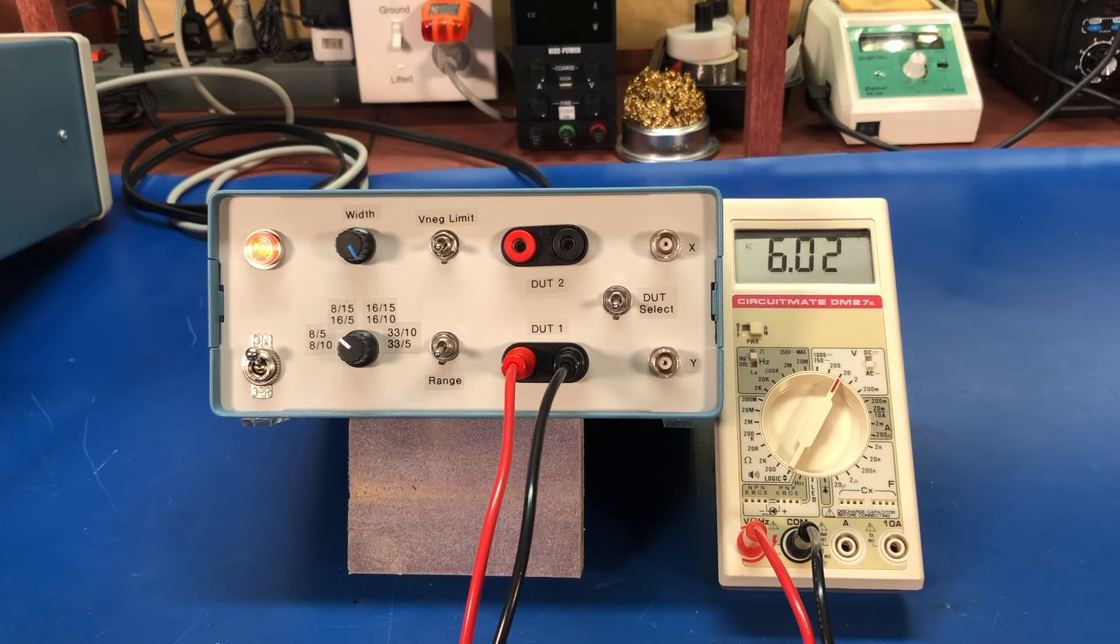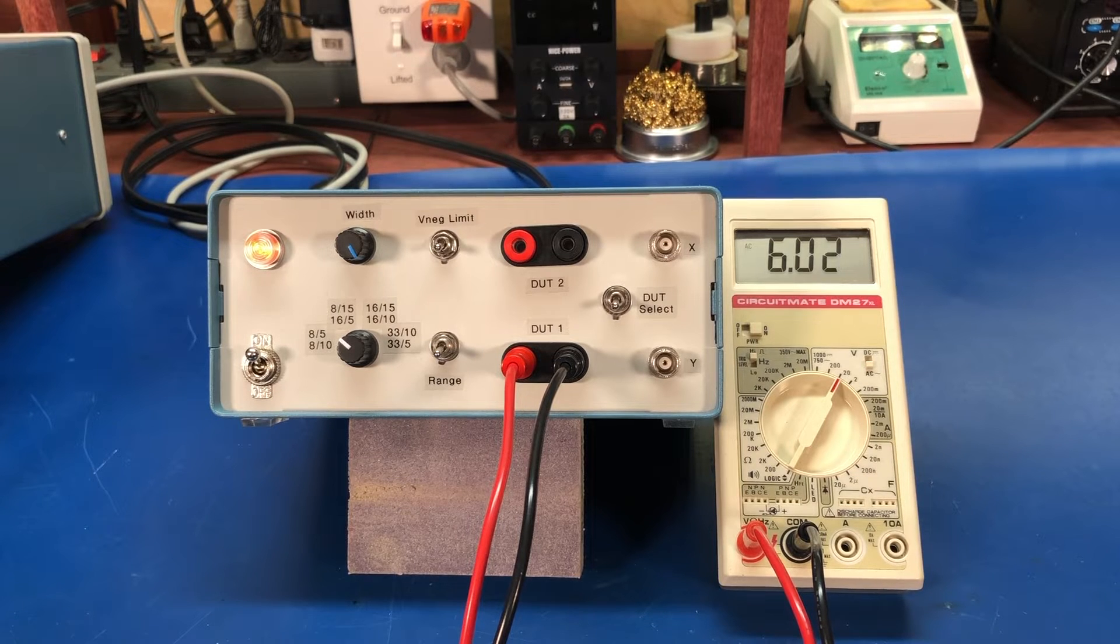Before we put a few components on it to test I thought I'd just show the voltage and current ranges that are on it. So I'm using my old CircuitMate DM27XL multimeter. This meter is about 30-40 years old. It's the first digital multimeter I got. Surprisingly still very accurate and it works.